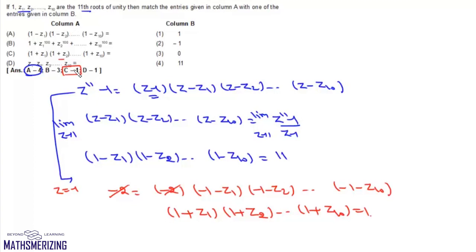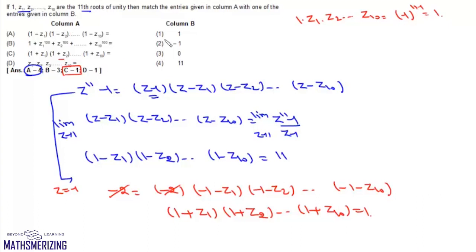Entry D is the product of all roots: 1·Z1·Z2·...·Z10. This equals (-1)^(N-1) where N=11, so (-1)^10 = 1. Therefore D also matches with 1.